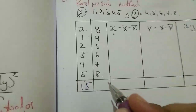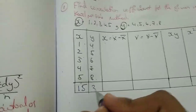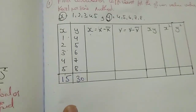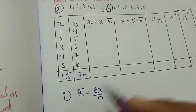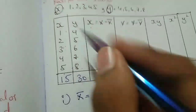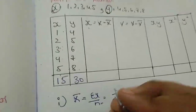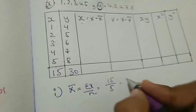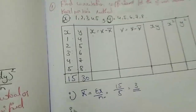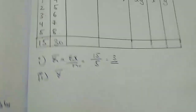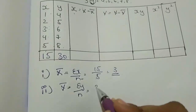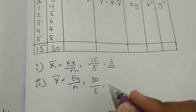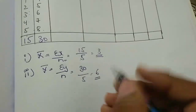Now implement the formula. x̄ is equal to sigma x divided by n, which is 15 divided by 5, giving x̄ = 3. Similarly, ȳ is equal to sigma y divided by n, which is 30 divided by 5, giving ȳ = 6. So x̄ = 3 and ȳ = 6.